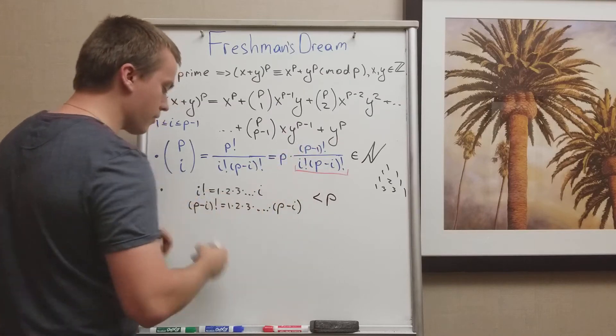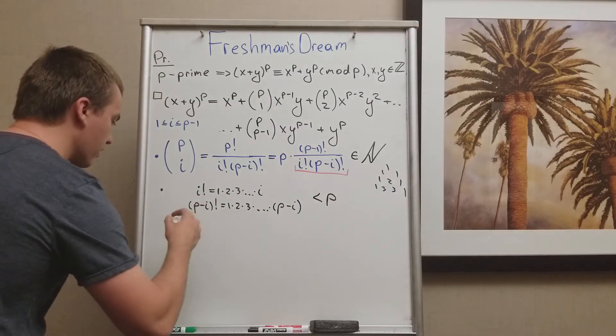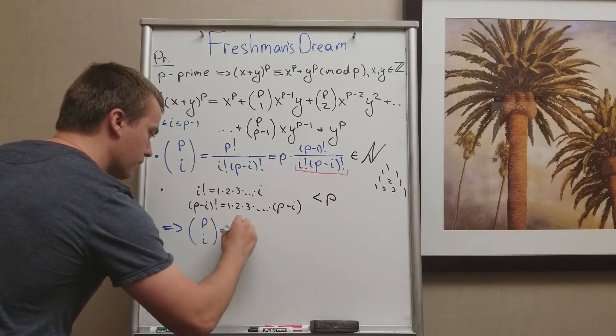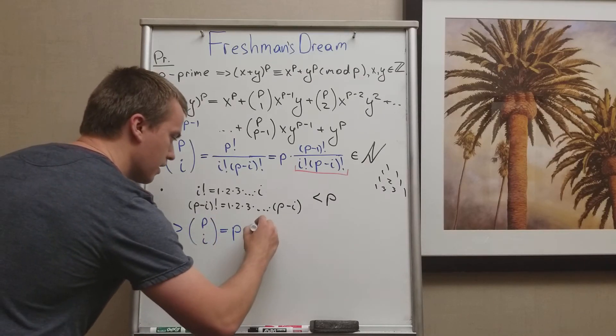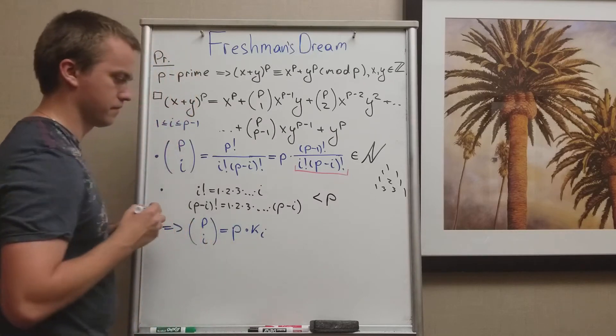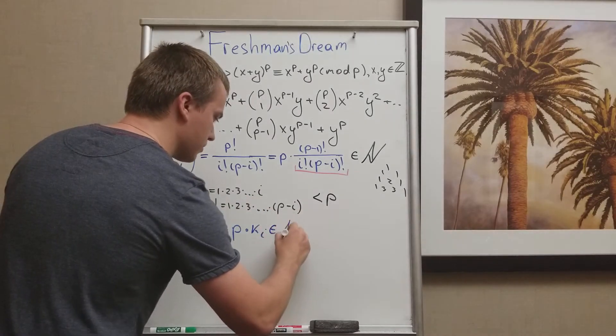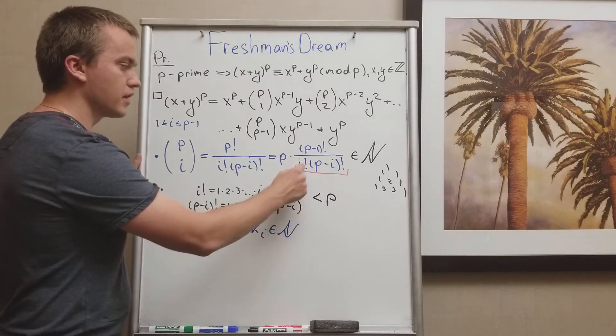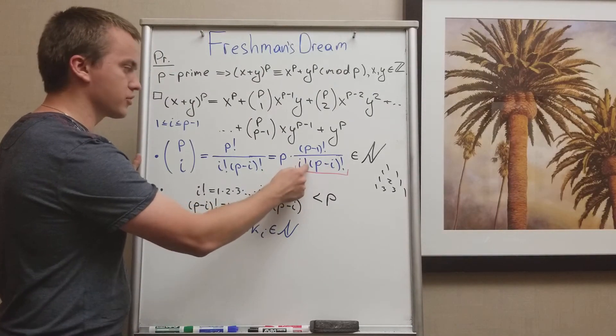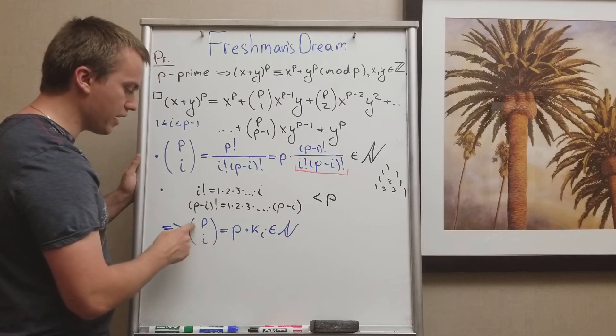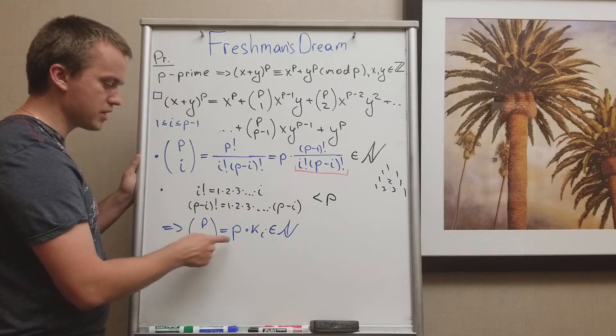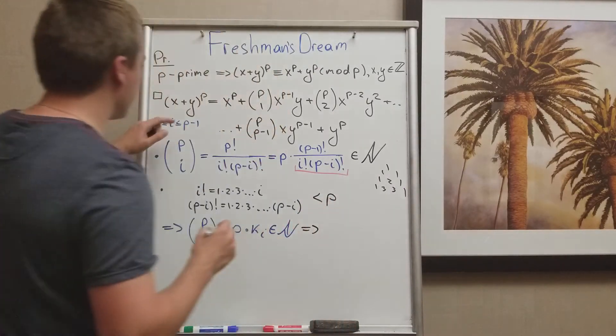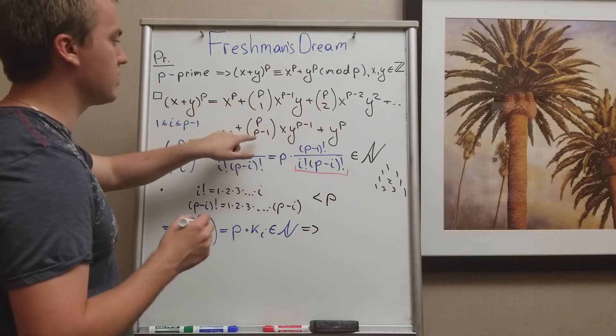So what I will get, I will get that this whole thing must equal p times, let's say, k_i, where this one belongs to natural numbers. So I showed that since neither of these factors is going to divide p, then each p choose i must be a factor of p. And from here, we're going to follow that each of these terms is going to be divisible by p.